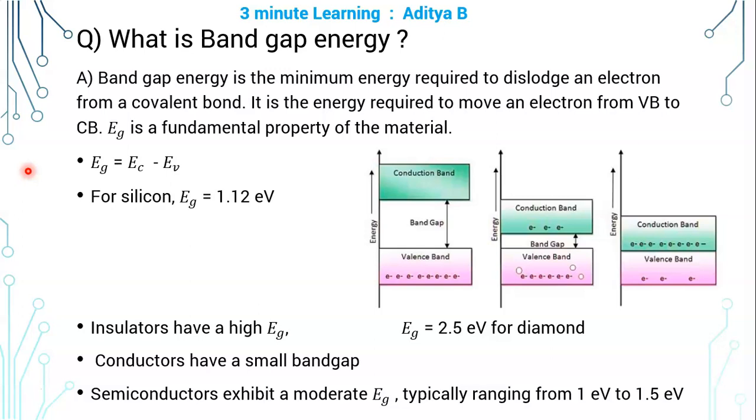Energy band gap is denoted by EG. EG is a fundamental property of the material.